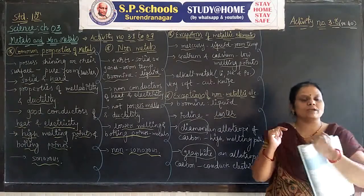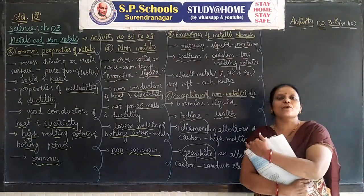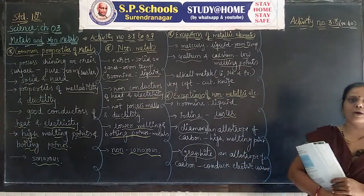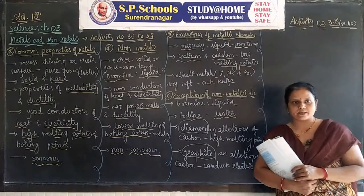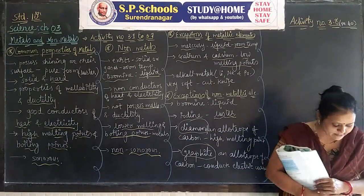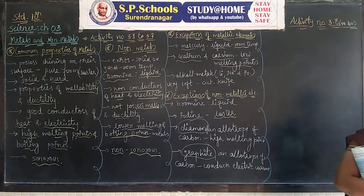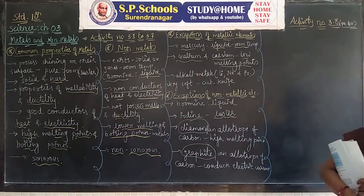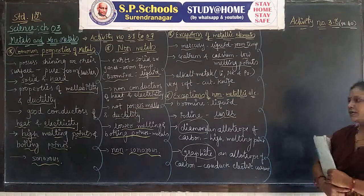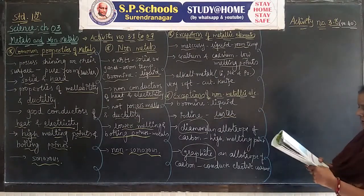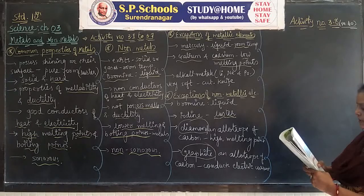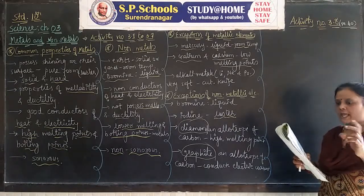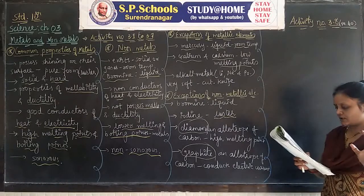Now burn sulfur powder, place a test tube over the burning sulfur to collect the fumes produced, add some water to the test tube, and test this solution with blue or red litmus paper. Is the product formed on burning sulfur acidic or basic? Can you write equations for these reactions? These answers are important for the board exam.